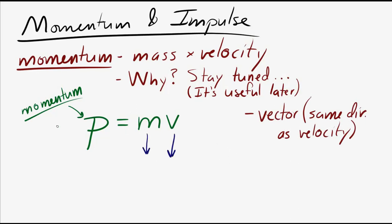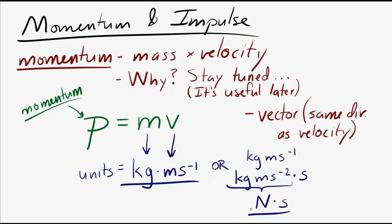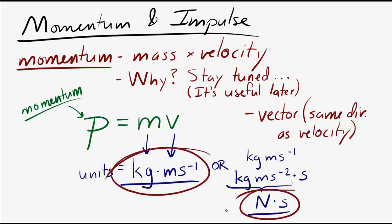The units of momentum can be found using the equation: momentum's units equal the unit of mass times the unit of velocity, giving kilogram meters per second. We can also rewrite that as kilogram meters per second squared times a second, and since kilogram meters per second squared is a Newton, another valid unit for momentum is the Newton second.